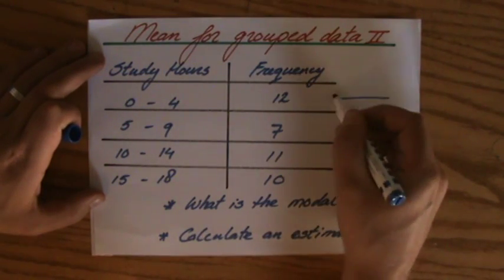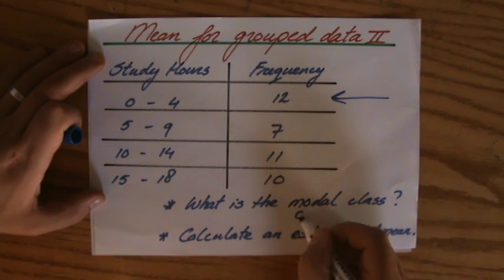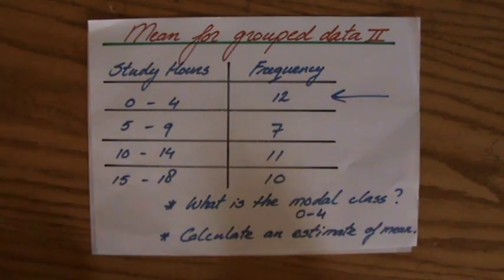and that will be this class, isn't it? So what is the modal class? Well, that would be the class from 0 to 4.